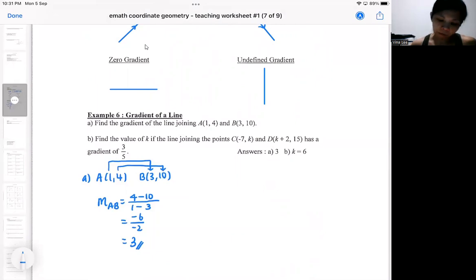For part B, we're going to go backwards. They gave us coordinates, but there are some unknowns in the coordinate. We do know that the gradient is 3 over 5. It's a bit like working backwards. It doesn't matter, you can still use a formula. Use it in the same direction.